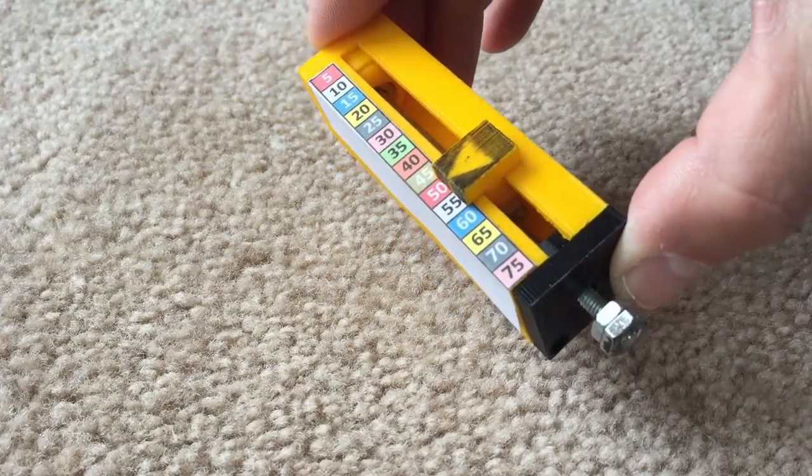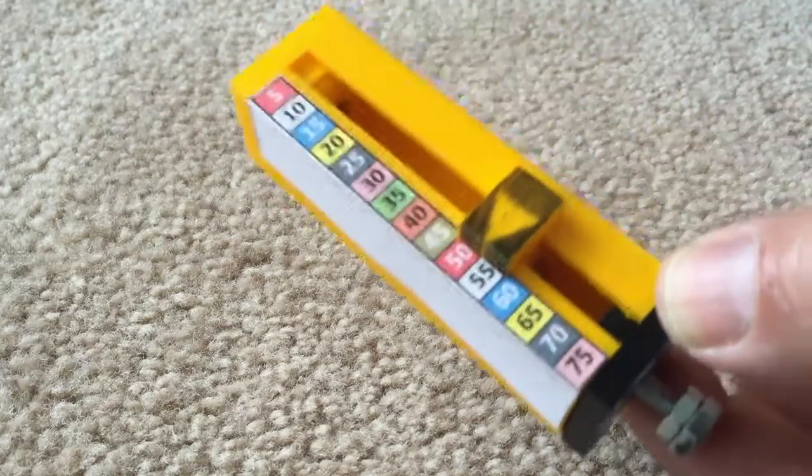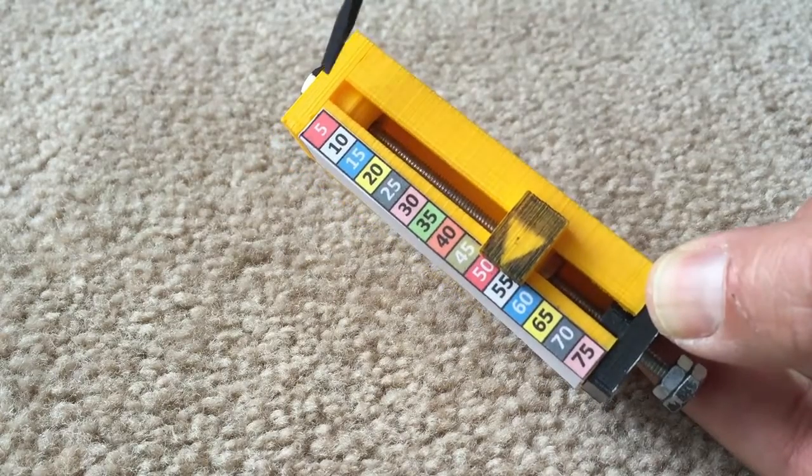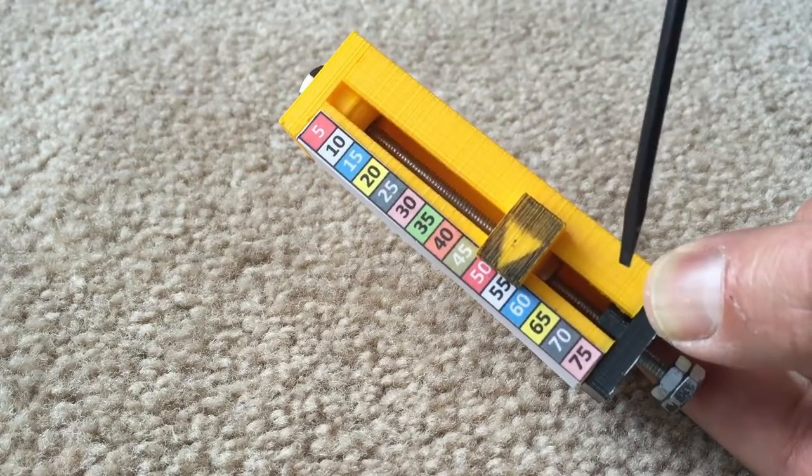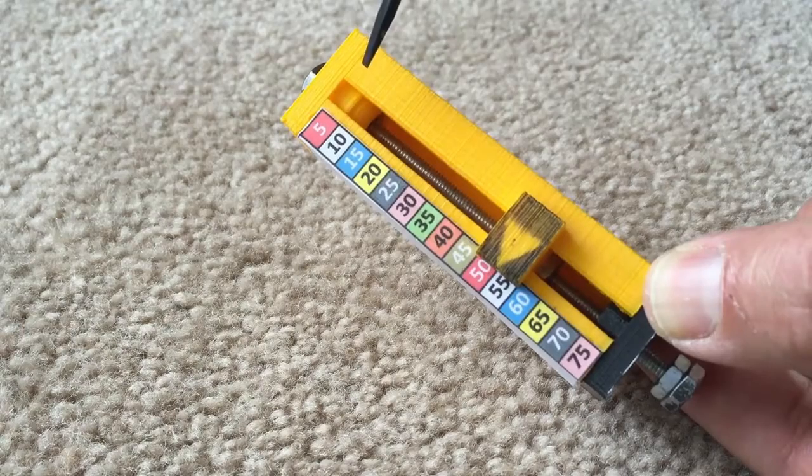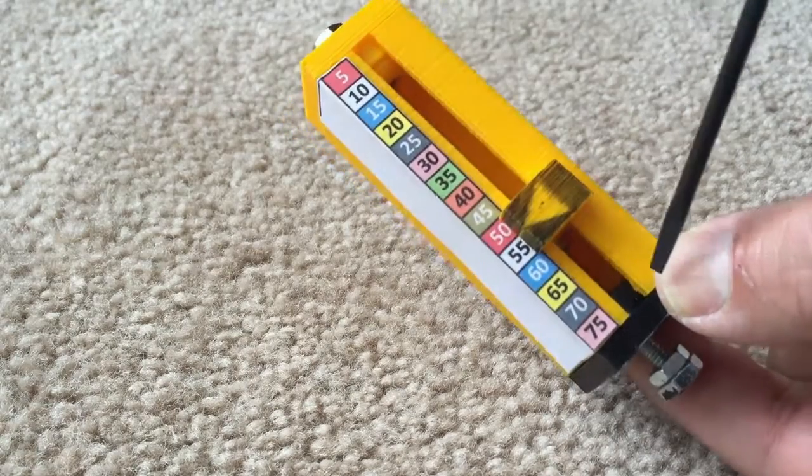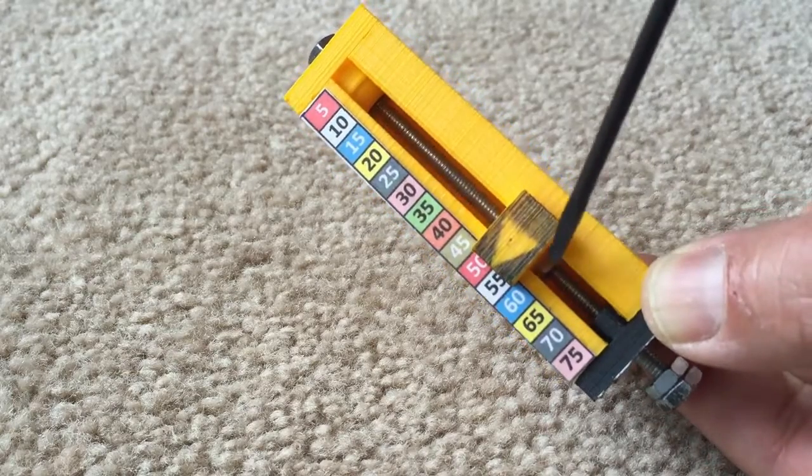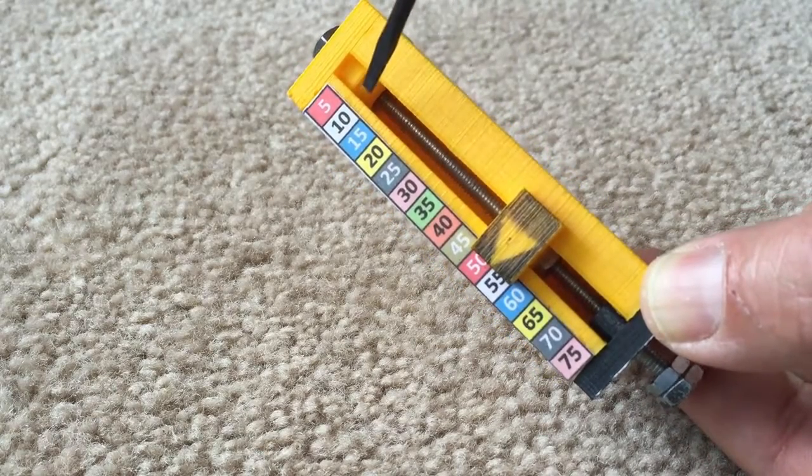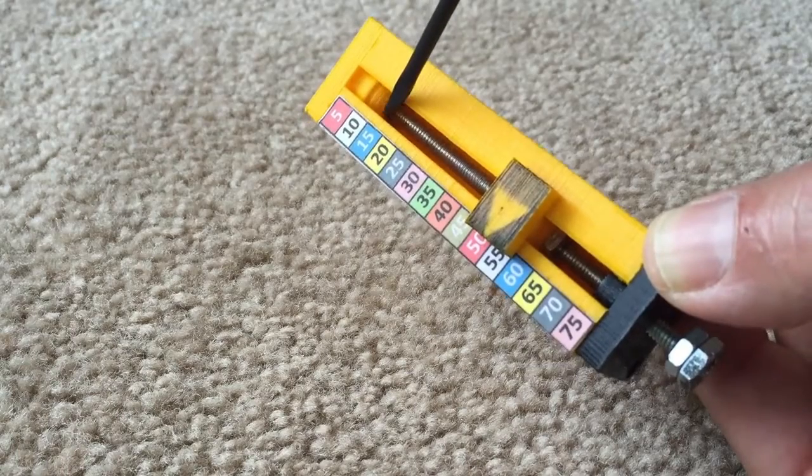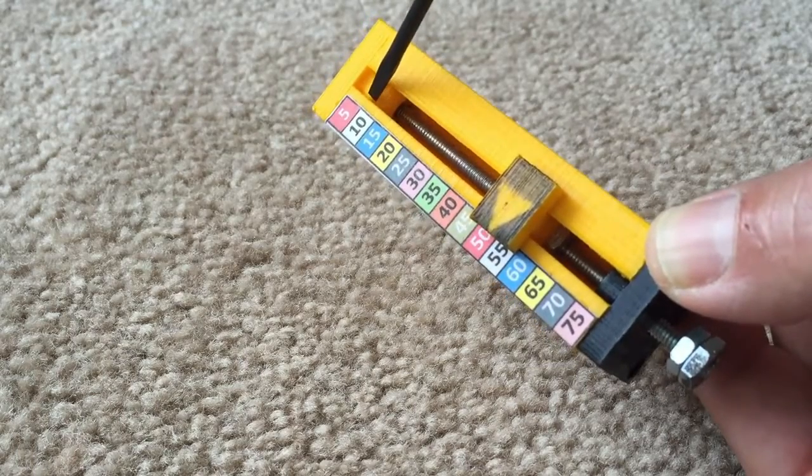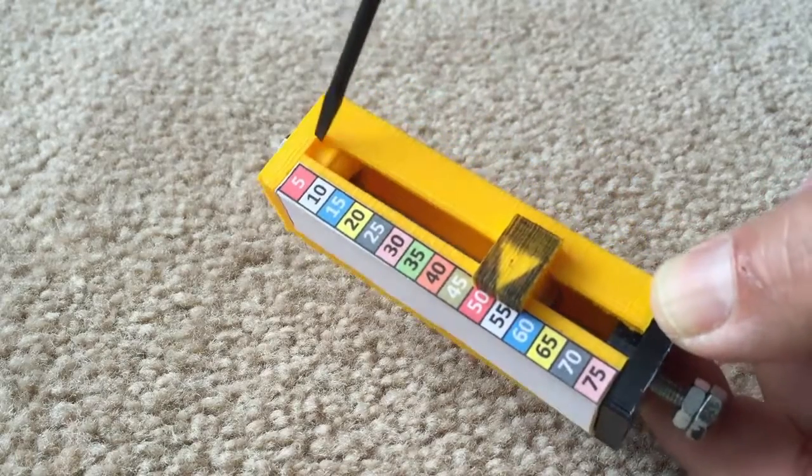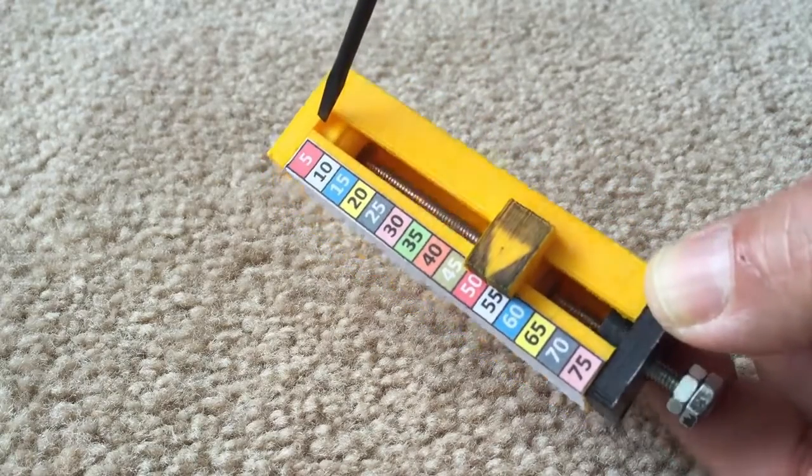What we have here is basically our housing, and this particular linear actuator has a 75 millimeter stroke. We have a screw that runs the entire length of our actuator. At this end we have a nut underneath this end cap, another nut on the back side that will keep this end of the screw captive.